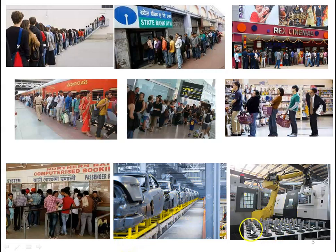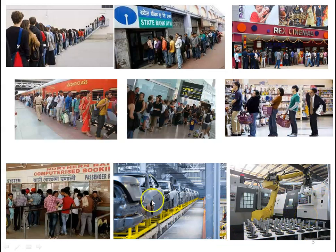There are also multiple queues in front of computers for booking train tickets, and cars forming a queue for a particular service. There are multiple jobs waiting in a queue for a particular operation, waiting to put a component into the machine. In our day-to-day life, queue is unavoidable.